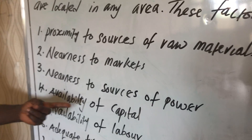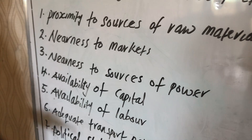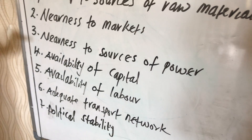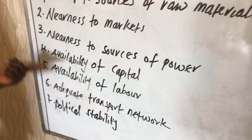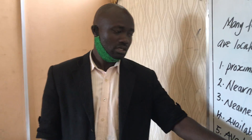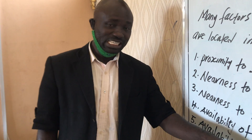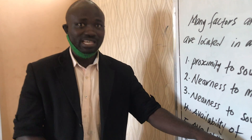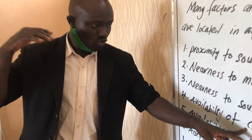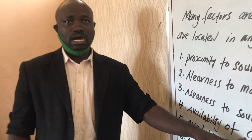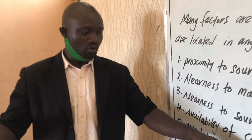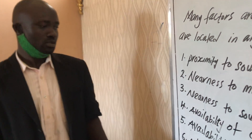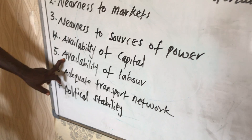The fourth factor is availability of capital. There is no industry that can operate, that can have full operation, without capital. Money is used to manage the production process, through to the finishing and distribution of products from one location to another.